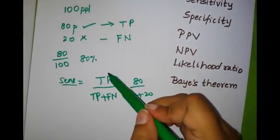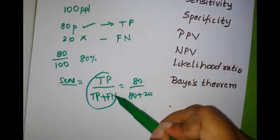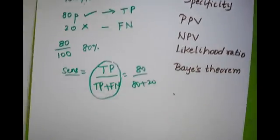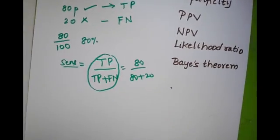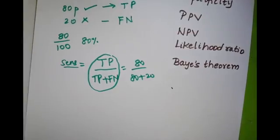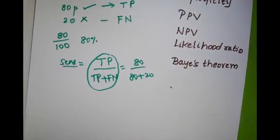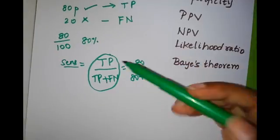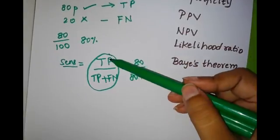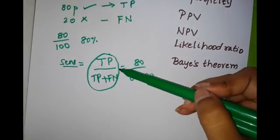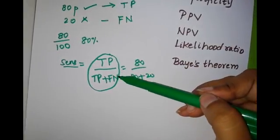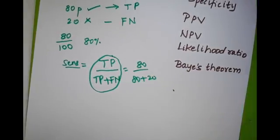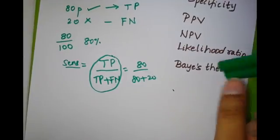I really want you to remember it in this format only. Please avoid using a by a plus b, or c by c plus d — it's really going to confuse you. However you construct the tabular column, if you remember true positive by true positive plus false negative, you're never going to go wrong in any of the questions.